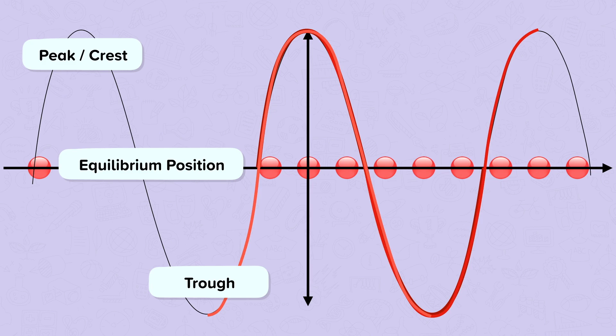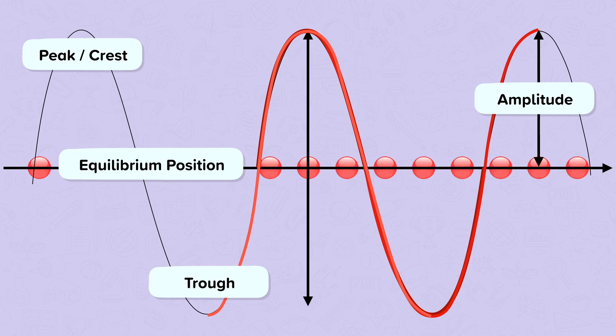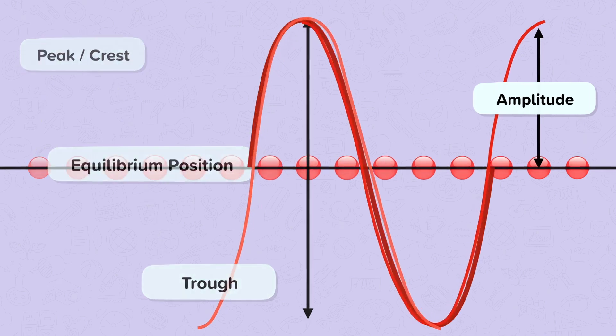How far the particles move up and down is called the amplitude of the wave. It's measured from the equilibrium position to the peak or to the trough. How long it takes for a particle to travel a complete cycle or go through a whole wavelength is called the period of the wave, and the number of waves per second is called the frequency.